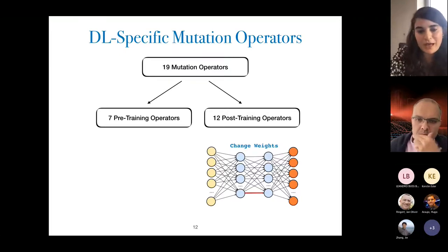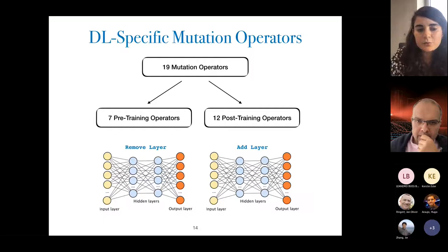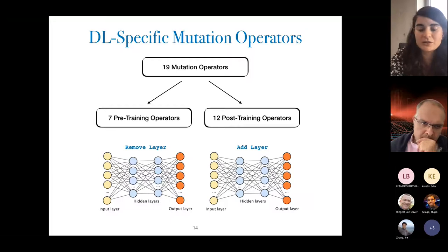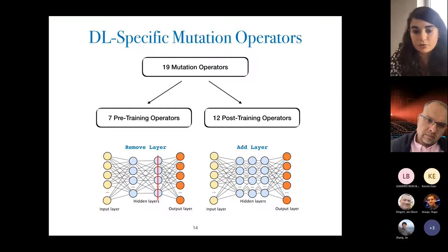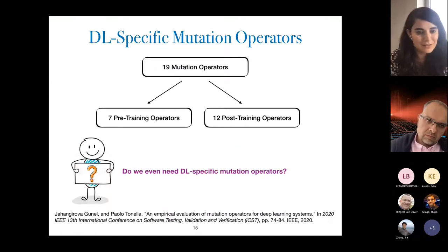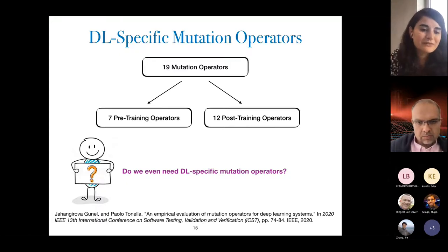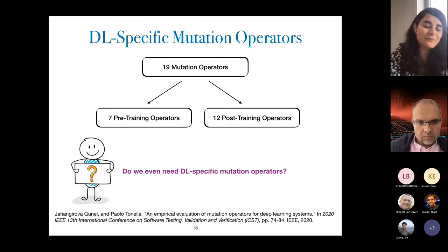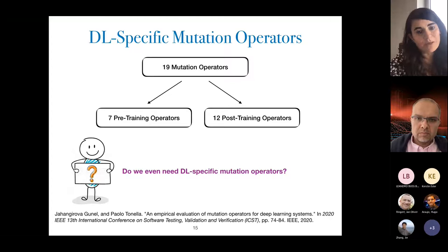For example, a weight of 0.5 might be changed to 0.75. There are also operators applicable both before and after training, mostly related to model structure, such as removing or adding a layer. Once we had these operators, the first question was: do we even need deep learning-specific mutation operators? There was no empirical evidence that they do something existing off-the-shelf mutation testing tools for Python couldn't do, so we decided to test that first.